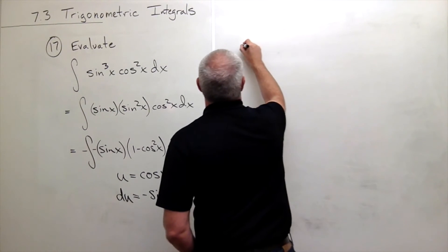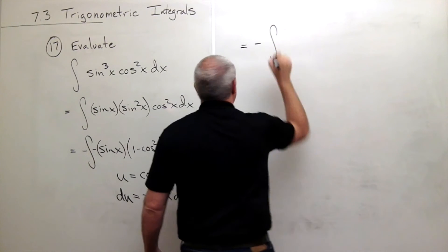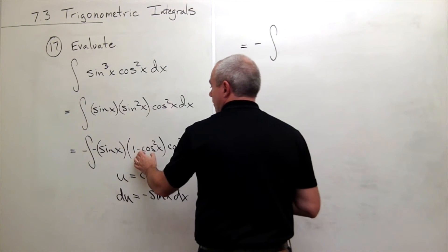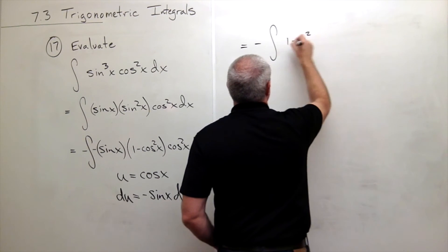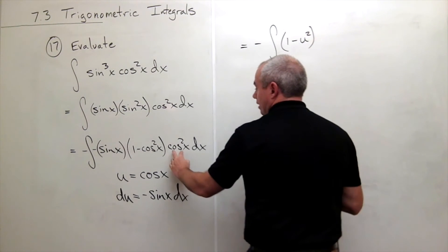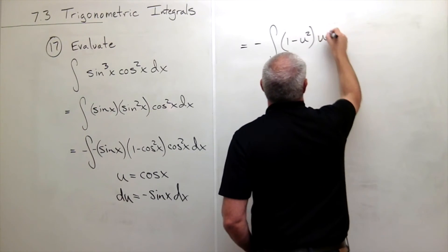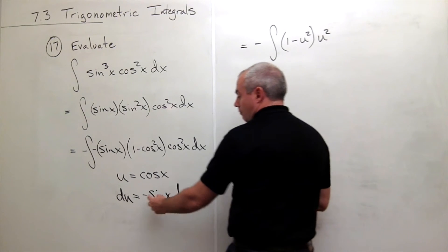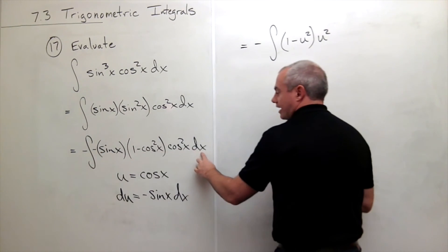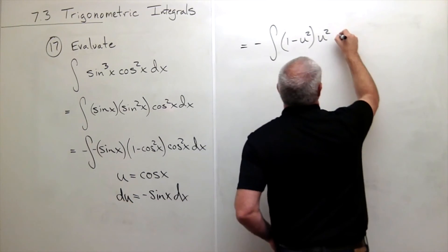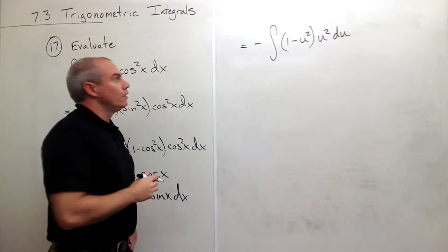When I make it, notice now I have a minus outside the integral, and inside the integral I have one minus u squared. And then cosine squared of x is just u squared, so times u squared. And the minus sine x dx, that's all just du.